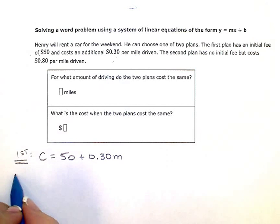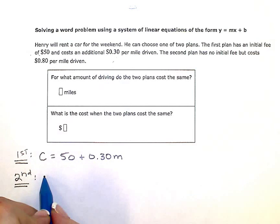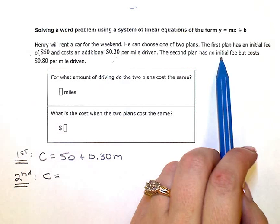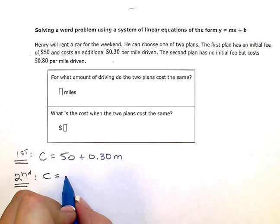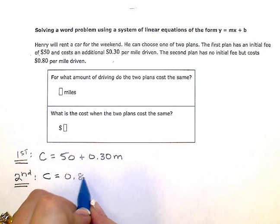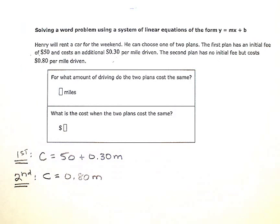The cost of the second plan could be represented in an equation that is cost is equal to, now there's no initial fee, so I only have the $0.80 per mile driven, using m for the number of miles.